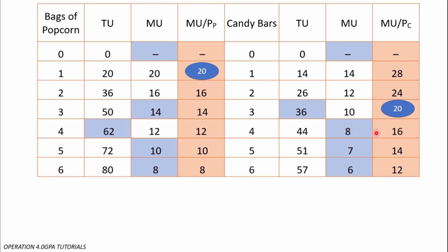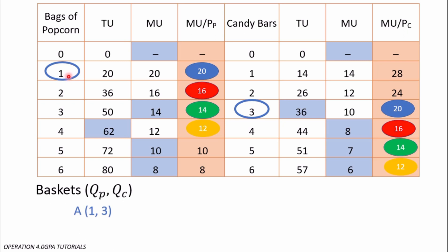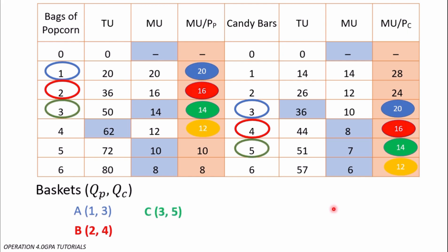We can see that both sides equal 20, with associated quantities of 1 for popcorn. This is not the only equilibrium condition — there are others. We also have 16, 14, 14, and 12. We are going to locate the baskets for all of these. Basket A is one bag of popcorn and three candy bars. Basket B is two bags of popcorn and four candy bars. Basket C is three bags of popcorn and five candy bars. Basket D is four bags of popcorn and six candy bars.